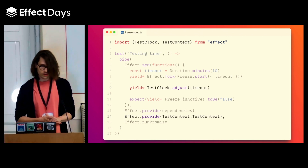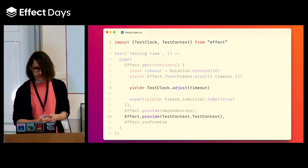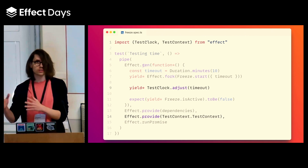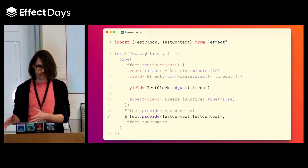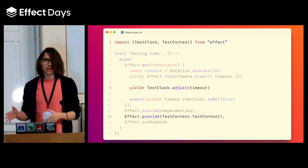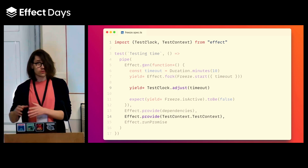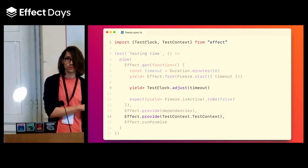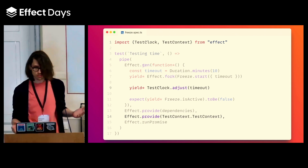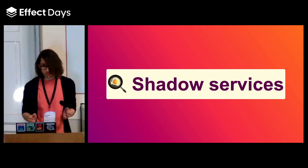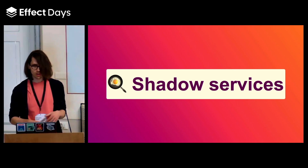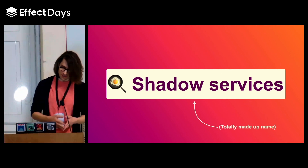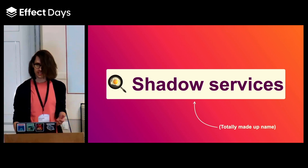That test clock service is pretty interesting, right? It allows us to do stuff that we can't do with the regular clock — we can't adjust the time with the regular clock. And it overrides the clock transparently, meaning if you use the regular clock, what you actually get is the test clock time, but you don't know that. That's transparent. I call that a shadow service because it runs things from the shadows while no one is aware of its existence. It's a totally made-up name, but it's very useful, so let's see how we can create our own.